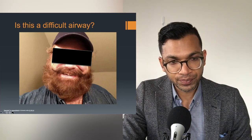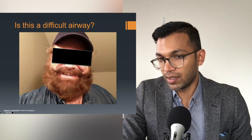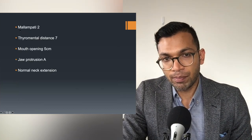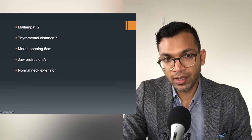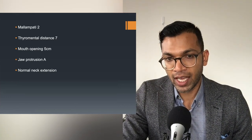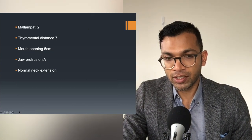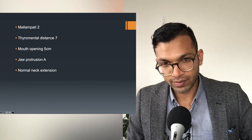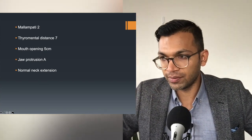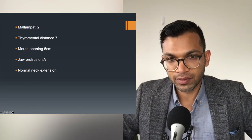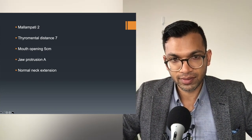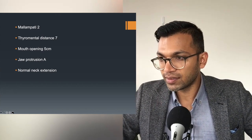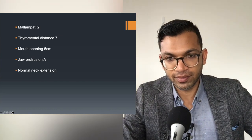I suspect most of you said this person has a beard, and that seems like a bad thing for airway management — and you'd be correct. But if I say this patient has a Mallampati two, thyromental distance of seven, mouth opening of five, jaw protrusion A (a good grade), and normal neck extension — a Mallampati two is not too bad. The only thing that might be difficult is getting a seal with the mask because of the beard, which you can navigate with a Guedel or something.